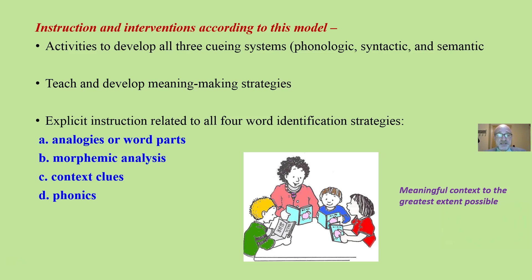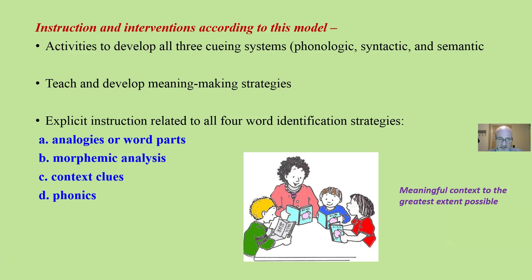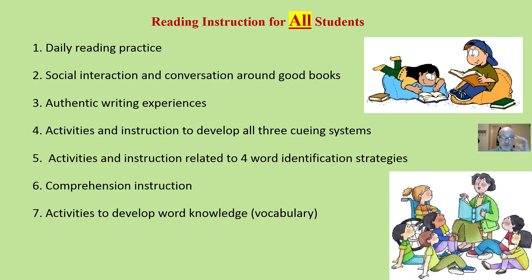Instruction and intervention according to the neurocognitive model should teach and develop meaning-making strategies, and include explicit and direct instruction related not to one but all four word identification strategies: analogy, morphemic analysis, context clues, and phonics. To identify a word is slightly different than to recognize it — to identify a word means you see it, you do not recognize it, so you need some strategy to identify what that word is.